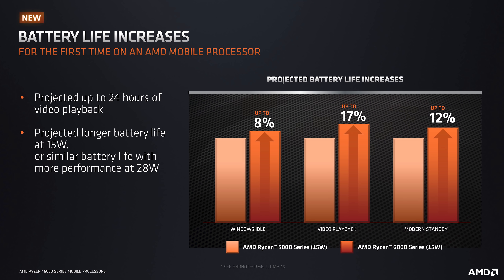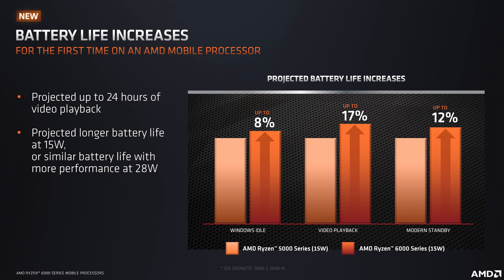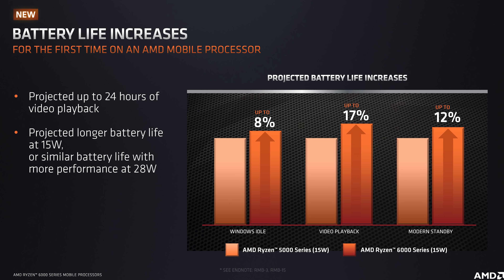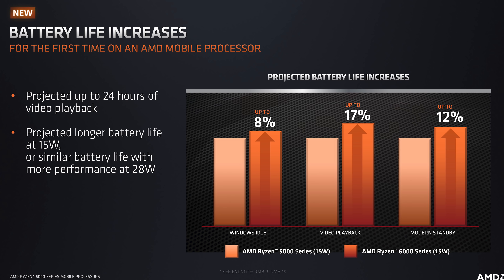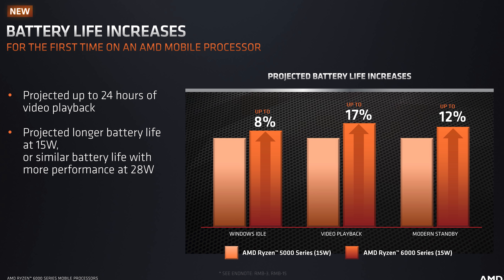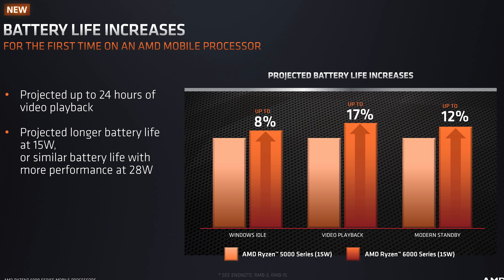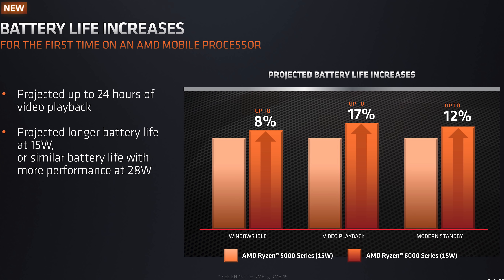When you have new CPU and SoC architectures designed for efficiency, the goal is typically to improve battery life and performance per watt. AMD were throwing around numbers like 24 hours of battery life, but it's hard to know exactly what that means and in what context. In a more apples-to-apples comparison, AMD are claiming 8% longer battery life in Windows idle, 12% in modern standby, and 17% in video playback, comparing 6000 series to 5000 series processors at 15 watts.